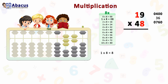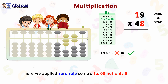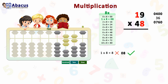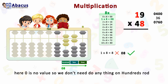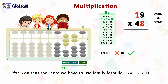The third step is 1 times 8 equals 8, but since 8 is a single digit, it's incorrect by the Zero Rule. The correct answer is 08. We also stay on the hundreds rod because three numbers remain in the calculation — 1, 9, and 8. Set 08 from the hundreds rod. Zero has no value, so nothing is done on the hundreds rod.